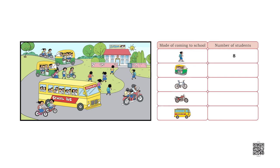Similarly, the number of children coming by auto rickshaw: let us count — 1, 2, 3, 4, 5, 6, 7. Now look at the other vehicles and count the number of students to complete the table. We have learned how to fill in a table through pictures and work with data.